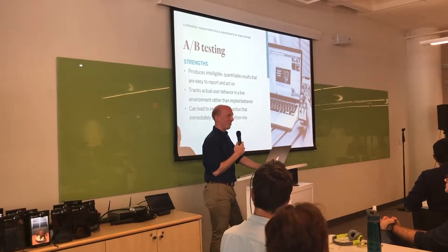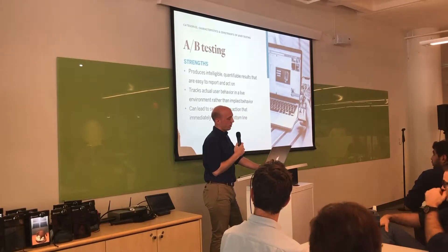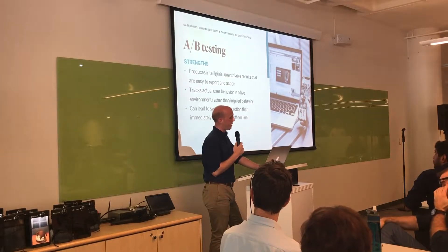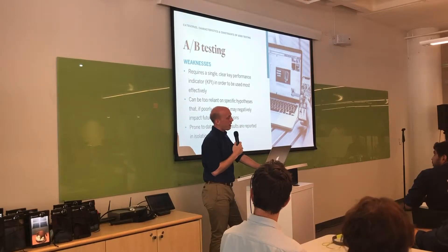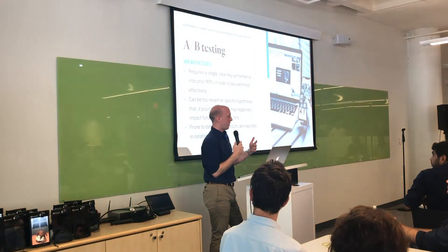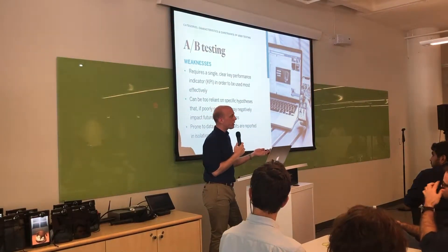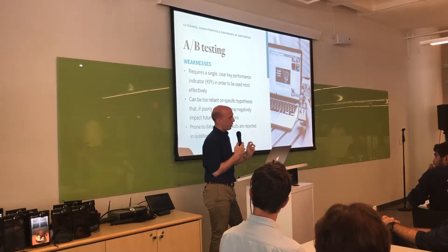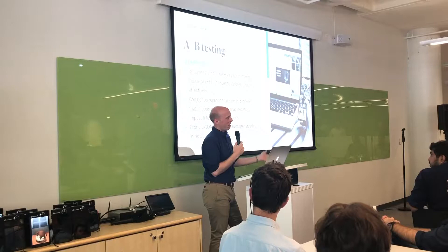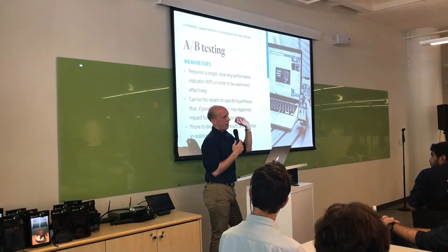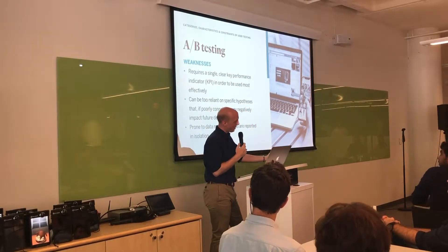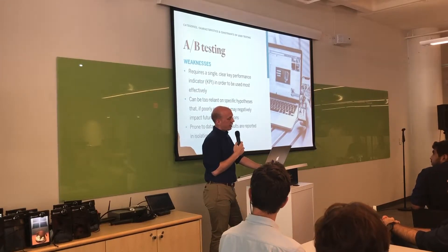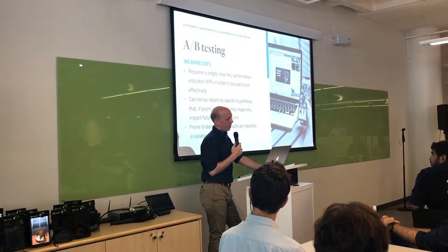In terms of its strengths, it produces intelligible, quantifiable results that are easy to report and act on. I can easily flip the switch to whichever option wins and easily report those results to someone at a higher level who isn't familiar with what the team's been doing. It can also lead to swift decisive action that immediately benefits the bottom line. A weakness is that it requires a single clear key performance indicator to be used most effectively. For example, on a homepage, do we want people to sign in or do we want them to buy insurance? There are competing KPIs on that page, so it's really difficult to optimize both and decide what weight each should be given - especially if you're not looking beyond the surface at drop-off rates.